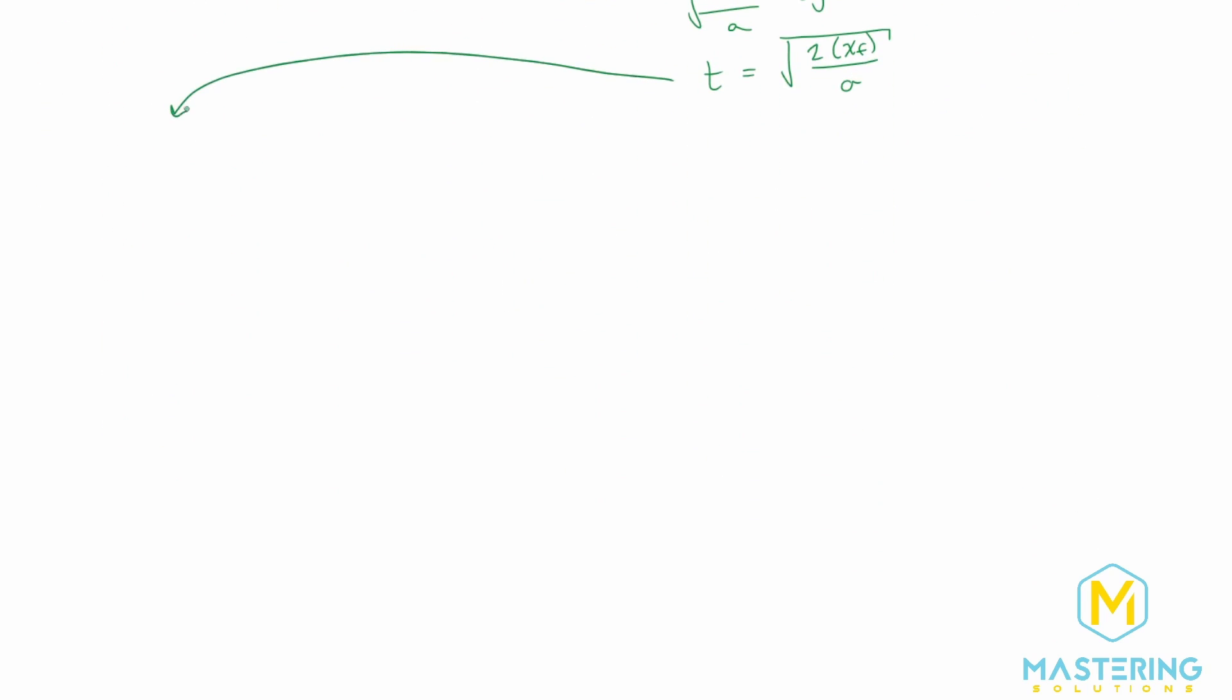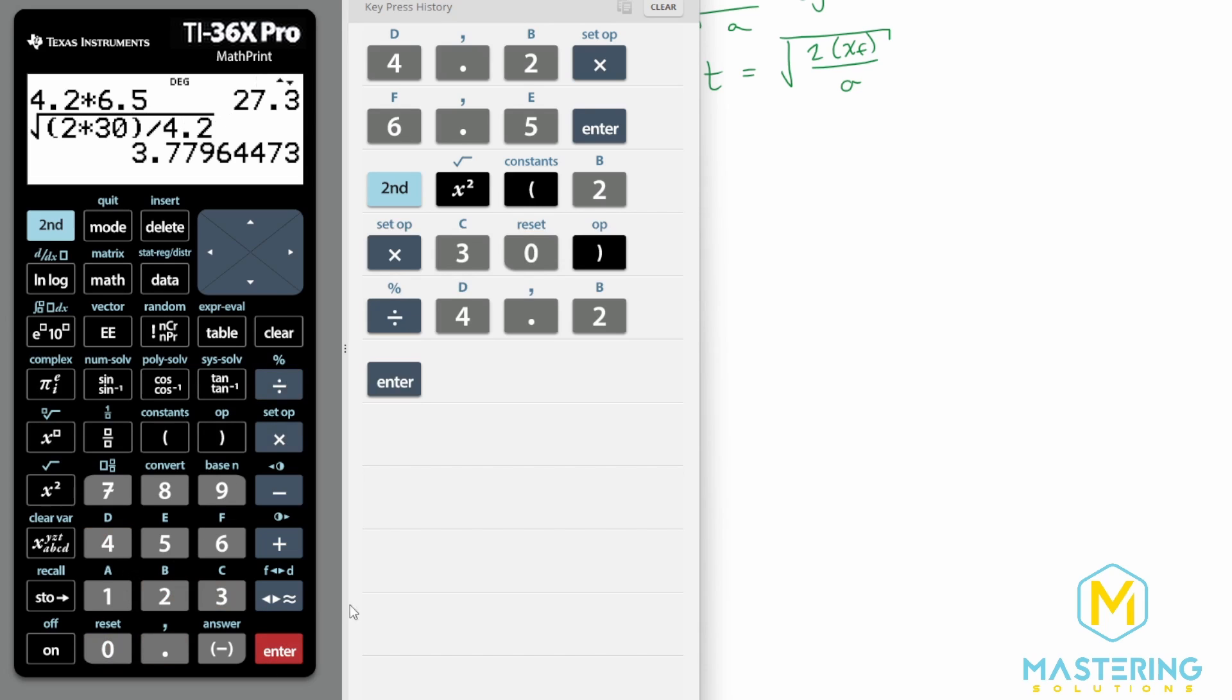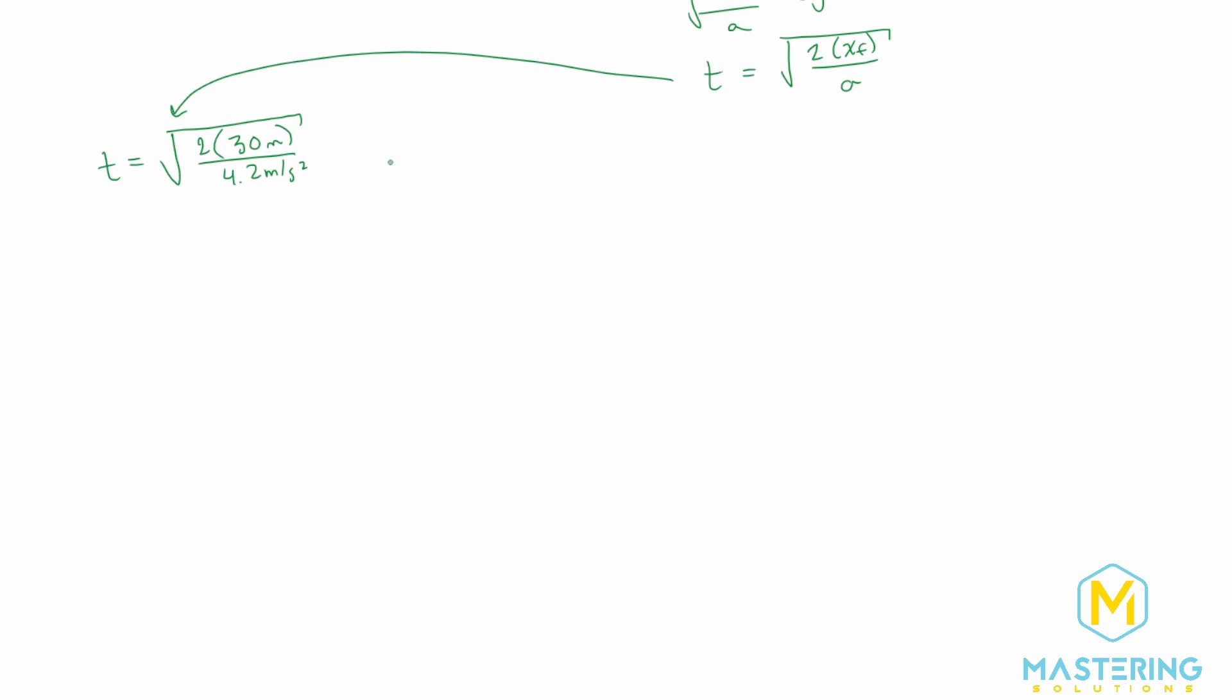So t equals the square root of two times the distance we said was 30 meters and the acceleration we said was 4.2 meters per second squared. So we'll take the square root of 2 times 30 divided by 4.2 gives us 3.8 so the time is 3.8 seconds. So they're correct a human a fast human could win a gazelle for a 30 meter dash.